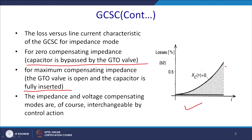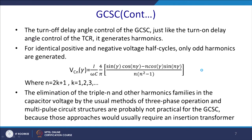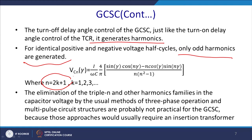The turn-off delay angle control of GCSC is analogous to the turn-on delay control of the TCR, and it generates the same harmonics. For identical positive and negative voltage half cycles, odd harmonics are generated. The capacitor voltage V_C(lambda) is given by (1/omega-C) × (4/pi) for the fundamental, followed by other harmonic terms, and the harmonic content follows the series n = 6k ± 1.